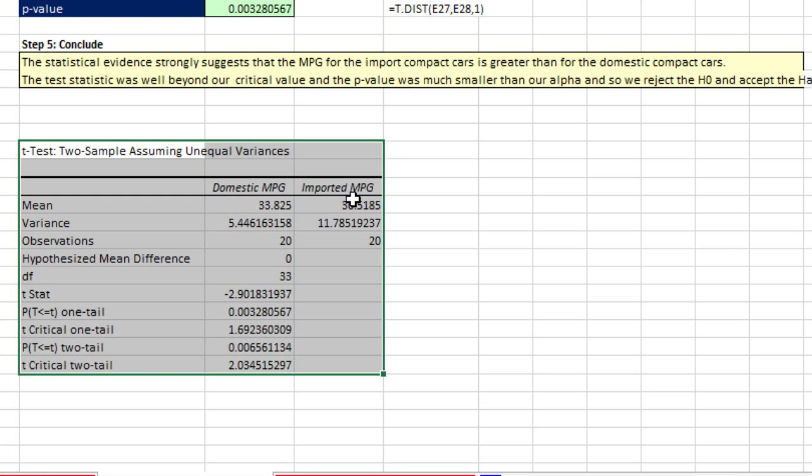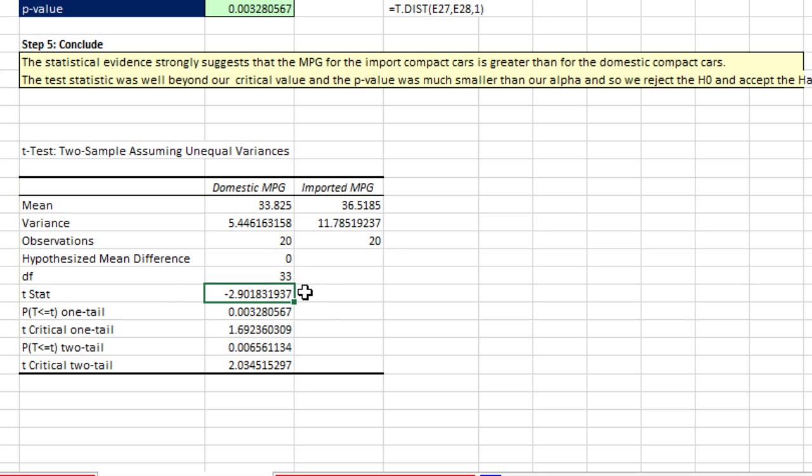It calculated the means, the variance, the number of observations. There's the degree of freedoms. And there's our T stat on the lower end. For a one tail, which is what we did, there's our P value. Notice this feature is nice. It gives you the one tail and the two tail down here. There's our critical value. We know it's on the low end, so we would slap a minus sign in front of that. That's pretty amazing.